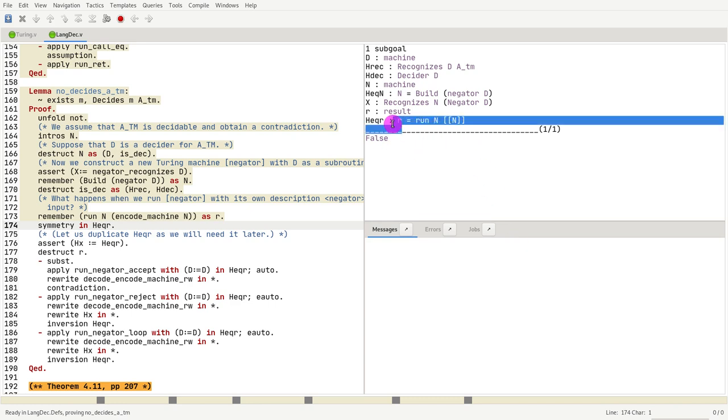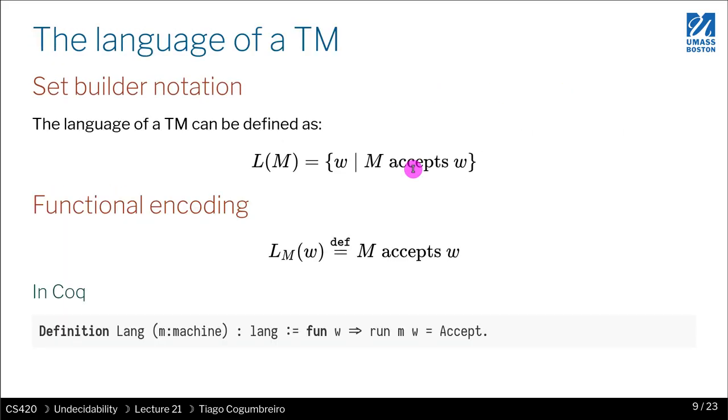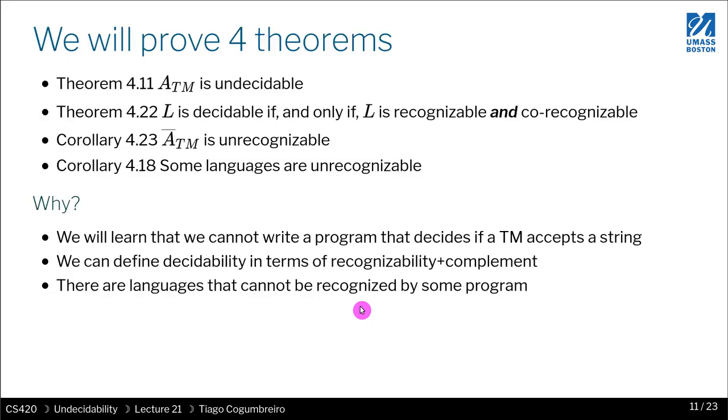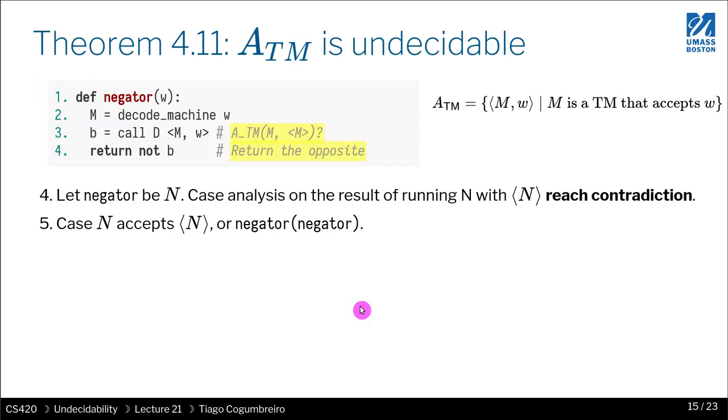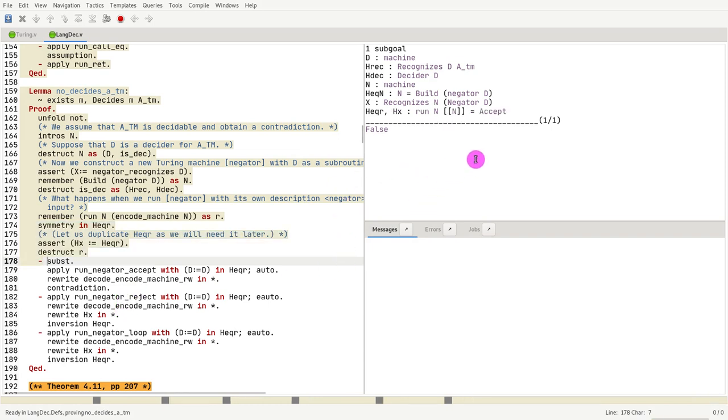And we send it as input. This double bracket means the code of N. Okay. So now what we need to do, we need to do a case analysis on the result. The result, as we just saw, the result of running a machine is either accept, reject, or loop. So that's what we're going to do. We're going to do a case analysis on whether or not N accepts N. So N is the machine. We're passing the input, its code. Okay. So now, so the first case, what do we know?